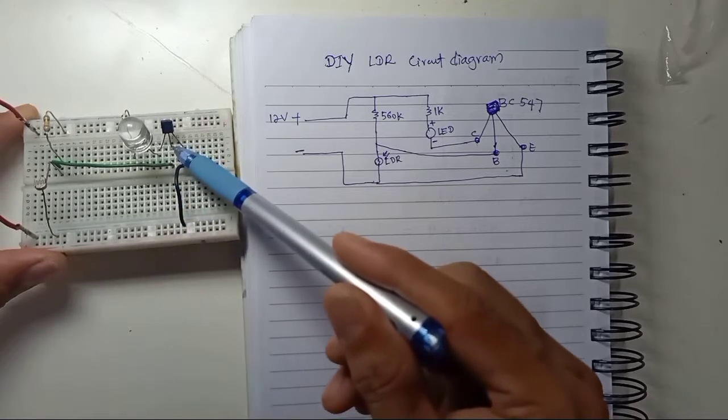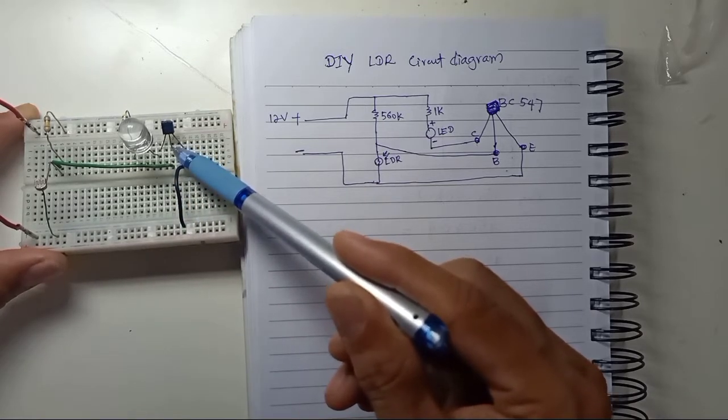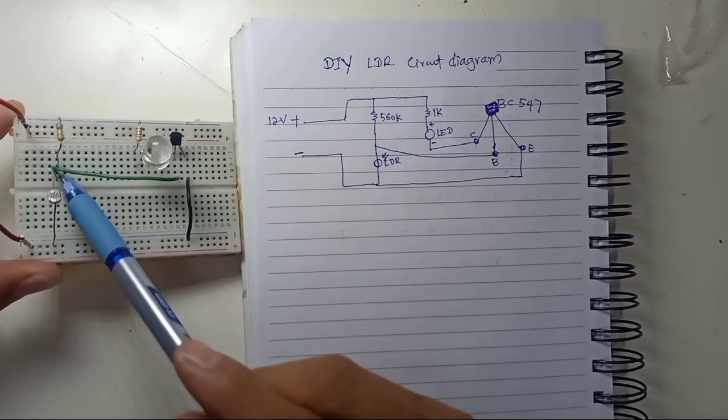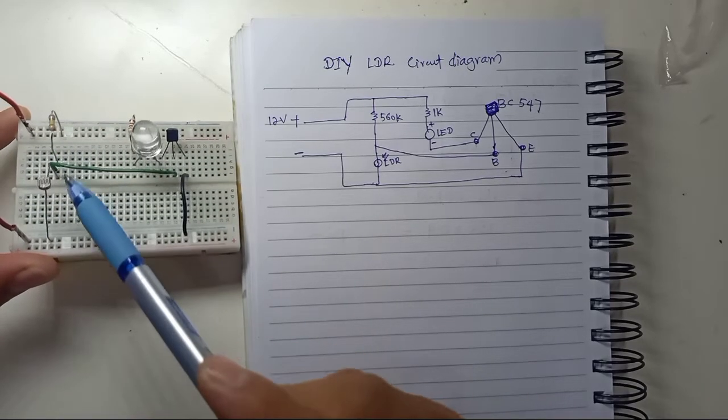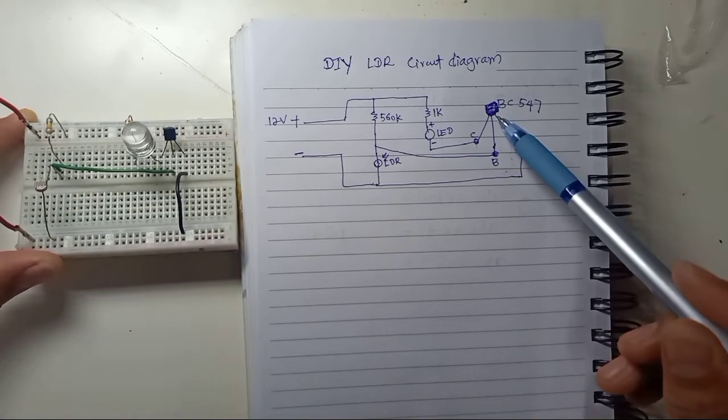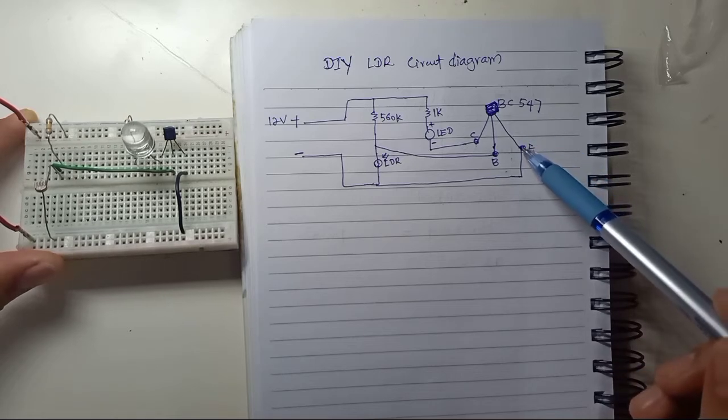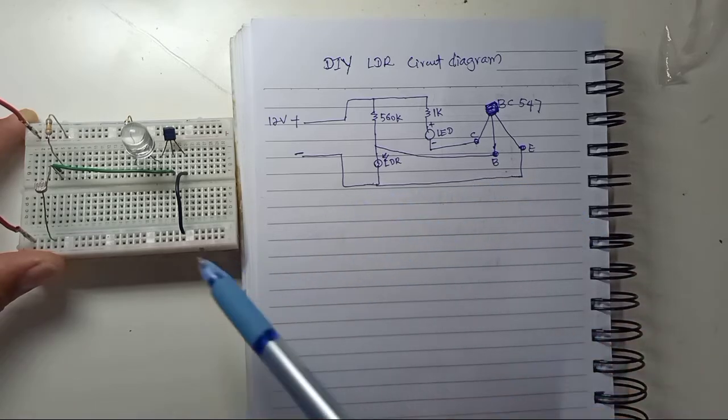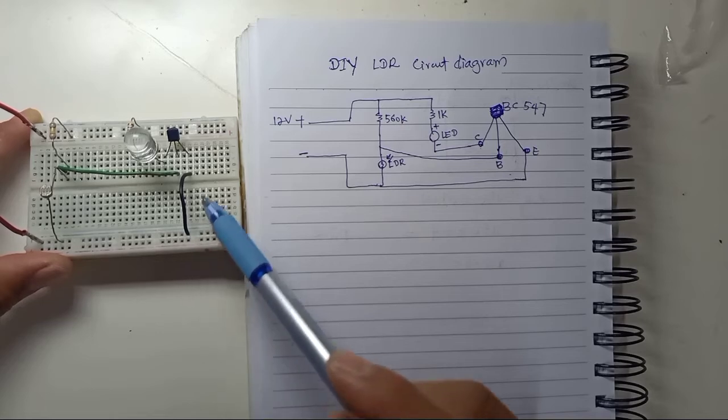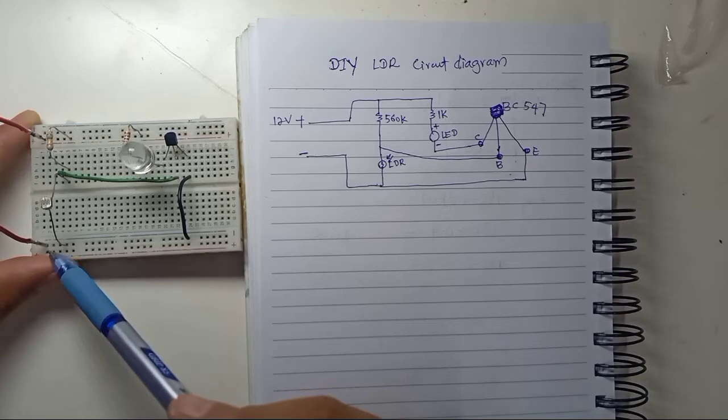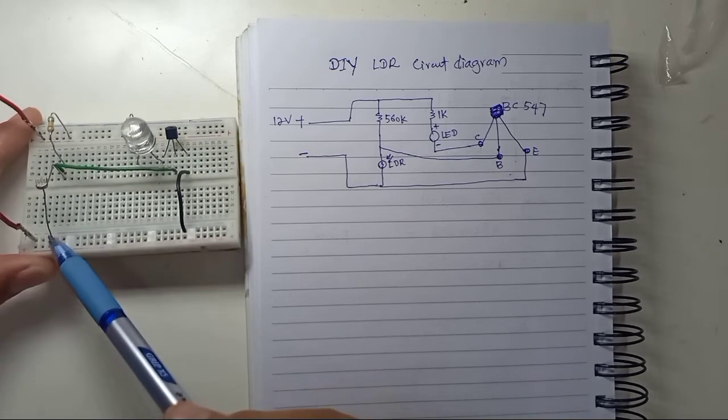So in the middle, base being connected to between 560K and LDR. So here, base of transistor pin, I jump the wire and connect that to in the middle of this 560K and LDR. And the last pin of transistor, BC547 is emitter. So emitter is connected to the ground, which is a negative of 12V power supply. So emitter connected to negative power supply. And right here. So this is very simple.